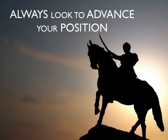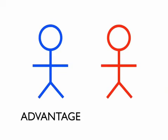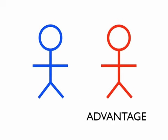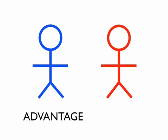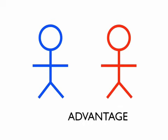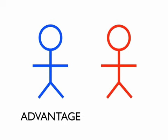Key concept two: always look to advance your position. When entering a conflict, ask the question: who has the advantage? With you and your opponent trying to outmaneuver each other, the answer may change constantly. This point may seem redundant, but it is actually the central theme of the entire Art of War text, first explained here in chapter one.